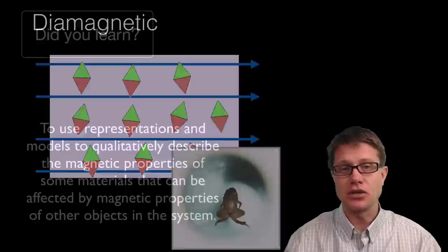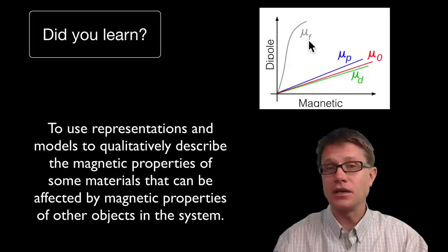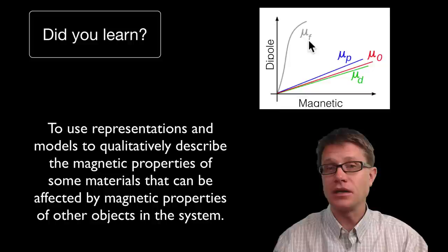And so did you learn to use representations to figure out how different materials respond to magnetic fields? Again they could be ferromagnetic, quickly responding and becoming permanent. Or they could be paramagnetic, so they are going to align with it. Or diamagnetic, so they are going to align against it. So hopefully you learned that and I hope that was helpful.